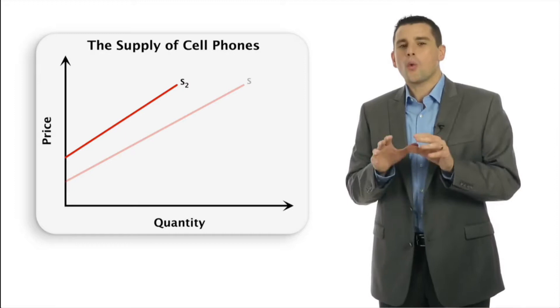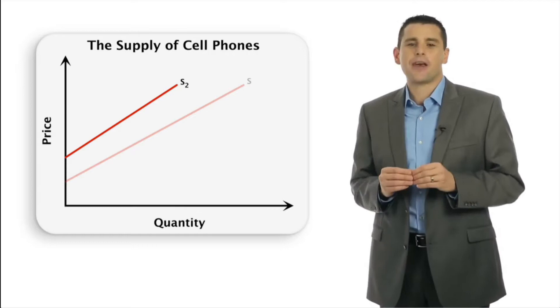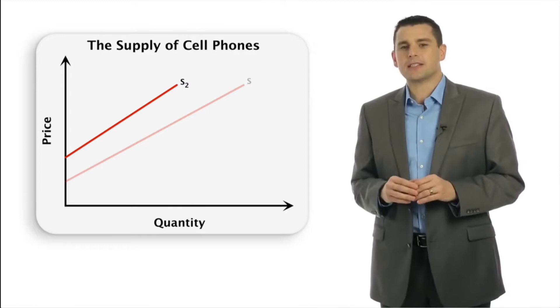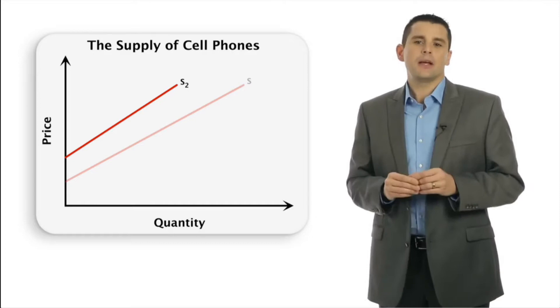Now, what about price expectations? What if producers expect prices to be higher or lower in the future? Would that have an effect on market supply today? The answer is yes, but the direction of the change depends on the producers and the products being supplied.